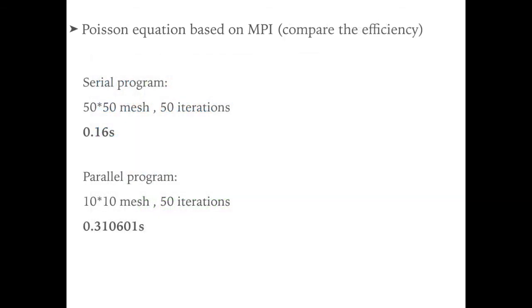Let's compare the efficiency of the two programs. For the serial program, we use 50 times 50 grid mesh, 50 iterations. It takes around 0.16 seconds. For parallel program, we use 10 times 10 mesh, 50 iterations, but it takes around 0.3 seconds. So, why the parallel version is slower than the serial version in this example?